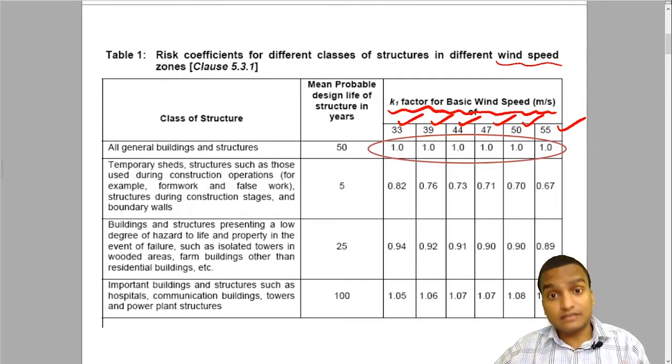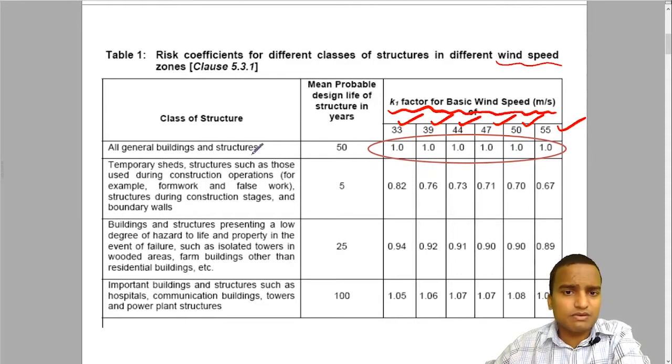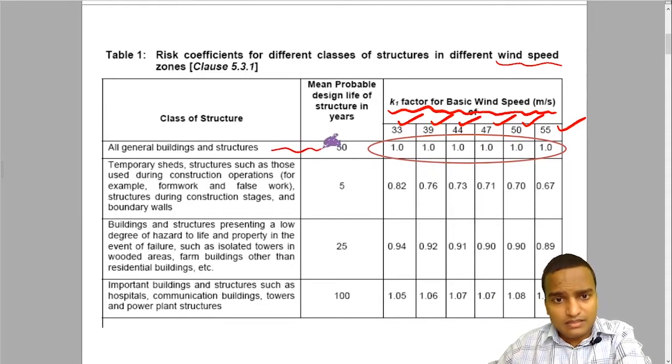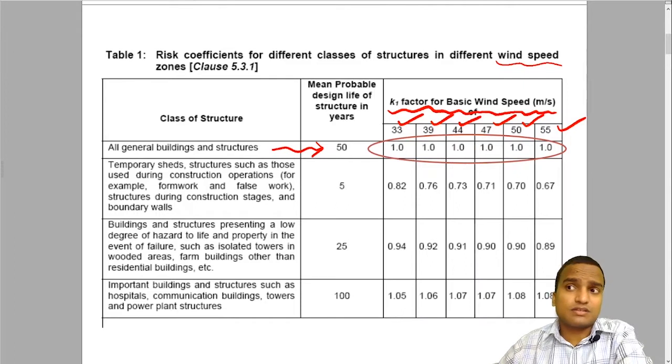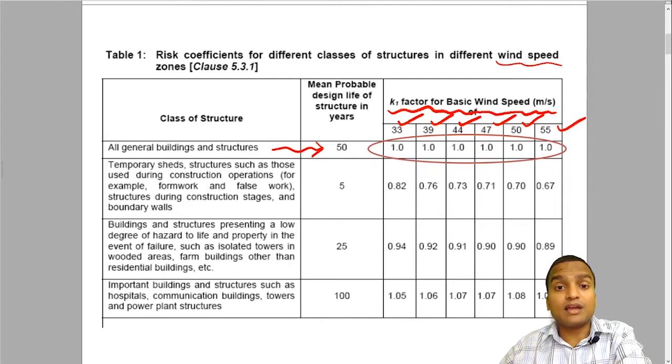What are these different classes of structure? There are different classes A, B, C, D like that. All general buildings and structures. The class of a building depends on the design life of a structure. Few structures have very less design life, whereas few structures have very high design life. General buildings and structures are kept in mind that they will have a design life of 50 years.